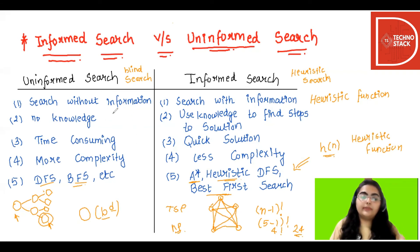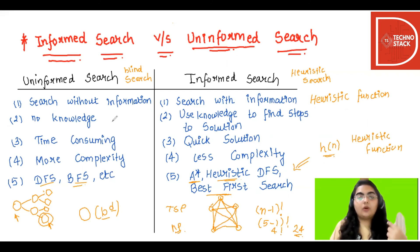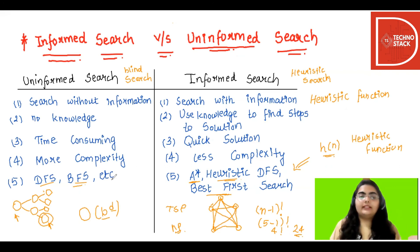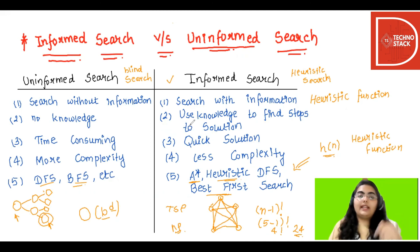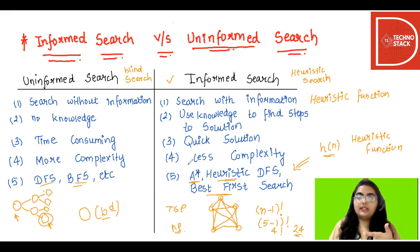In summary: uninformed search — search without information — uses no prior knowledge. It is time consuming as it uses trial and error, exploring all possible branches and outcomes. It has more complexity and hence more cost. Examples are DFS, BFS, etc. It is also known as blind search. Informed search uses heuristic functions and prior knowledge to find steps to the solution. It gives a quick solution with less complexity and less cost. We can get a good solution, but not necessarily an optimal one. Examples are A*, heuristic DFS, and best-first search.